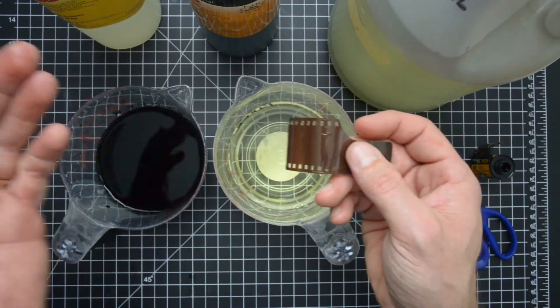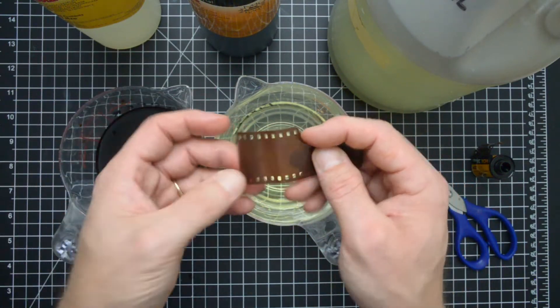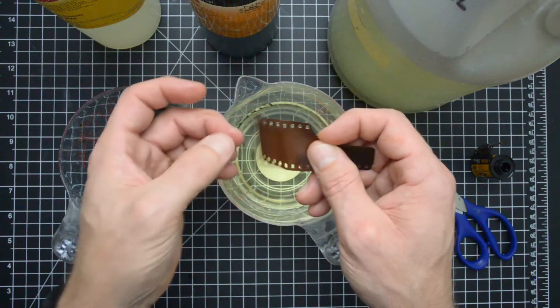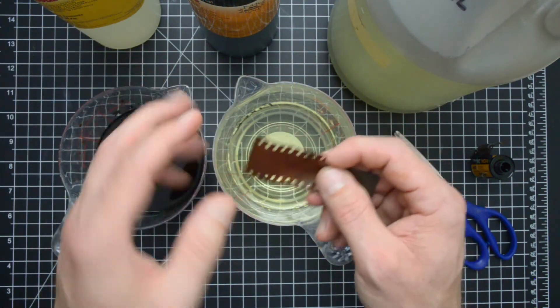It's not a bad idea to time how long it takes you to get the negative to turn clear, and then I would just add 30 seconds on top of that to make sure that you've fixed it long enough.